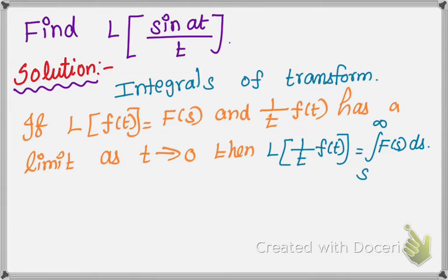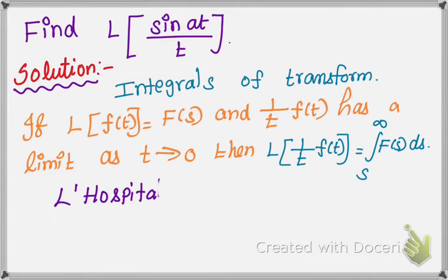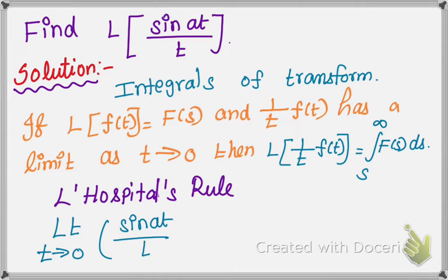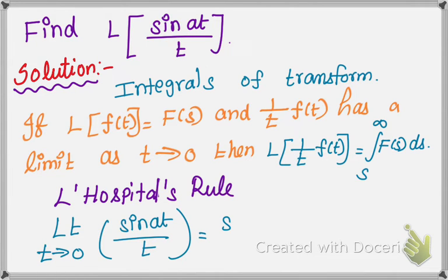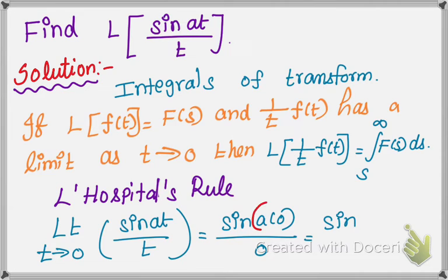First, we apply the limit. L'Hôpital's rule says to apply the limit for the given problem. So, limit as t tends to 0 of sin(at)/t. Wherever t is there, we apply the limit. Substituting t = 0: sin(a·0)/0 = sin(0)/0 = 0/0. This is called an indeterminate form.